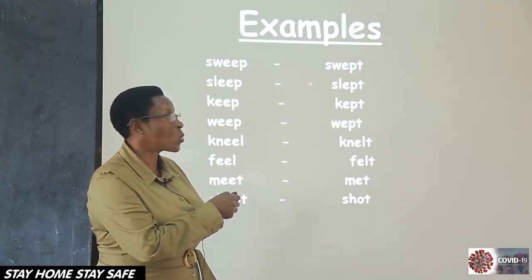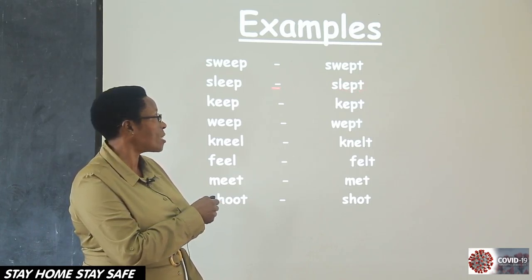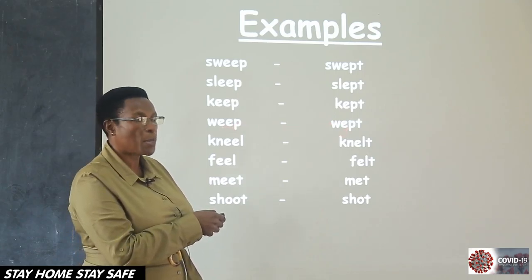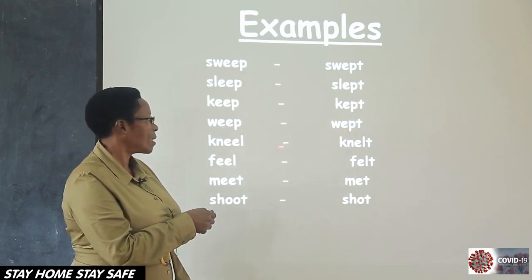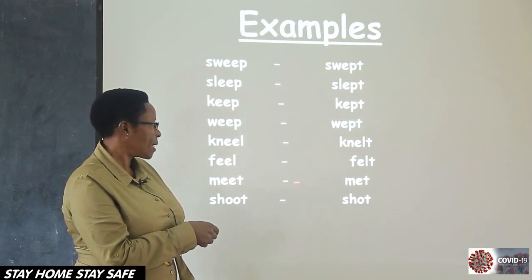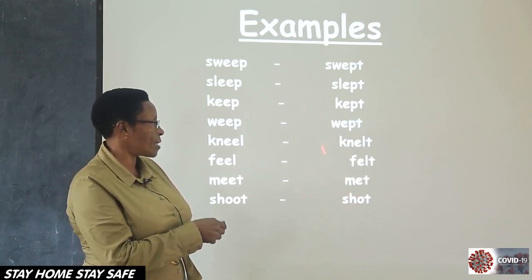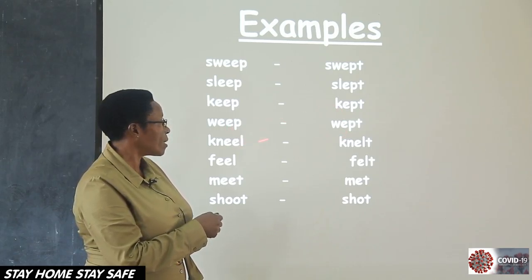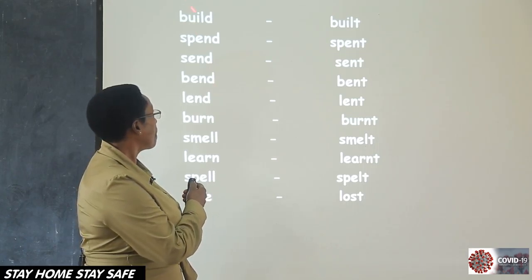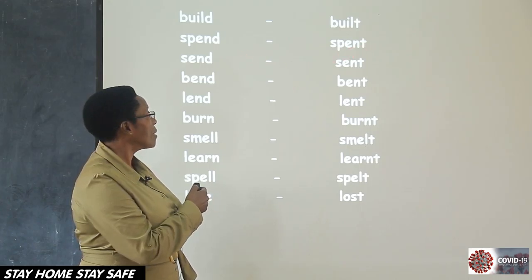Let's look at the examples and read together. Sweep — it changes to 'swept.' It has dropped one E and ended with T. Sleep — slept. Keep — kept. Weep — wept. Kneel — knelt. Feel — felt. Meet — met. Shoot — shot. Have you seen this? They are dropping one vowel.